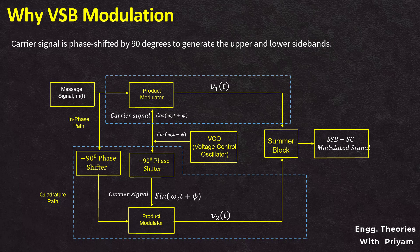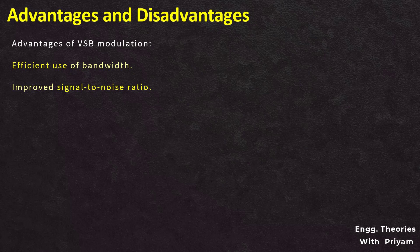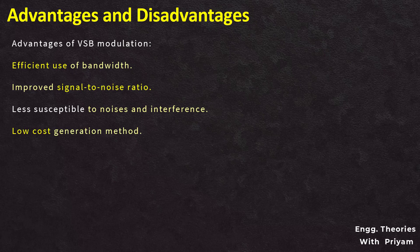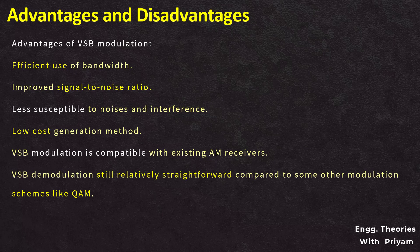Finally, VSB modulation is less susceptible to interference from other signals because the VSB sideband is still present, which helps to improve the signal-to-noise ratio. The advantages of VSB modulation include efficient use of bandwidth and improved signal-to-noise ratio, as it concentrates the transmitted energy in a narrow bandwidth, effectively reducing the noise power outside the desired frequency range.